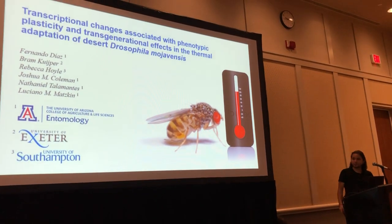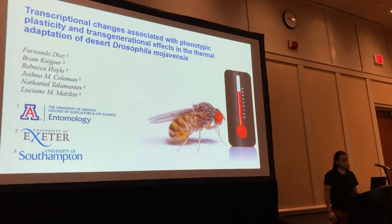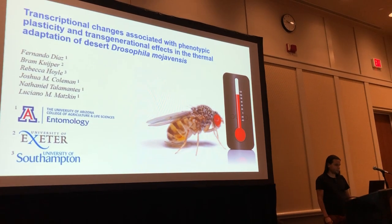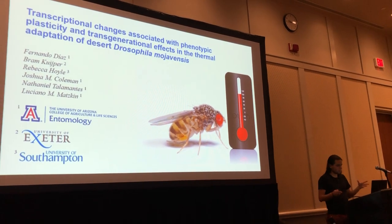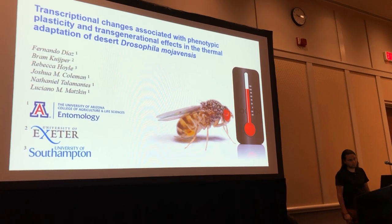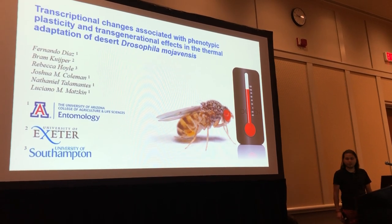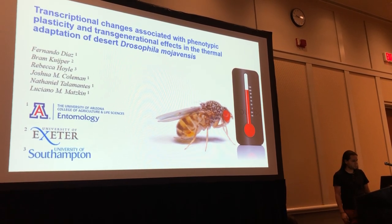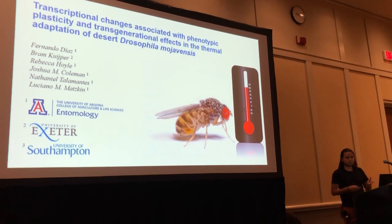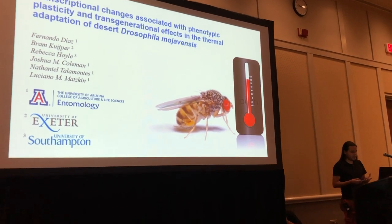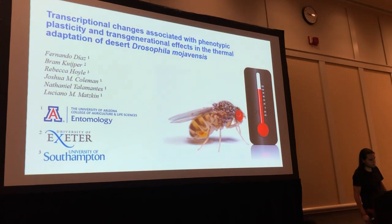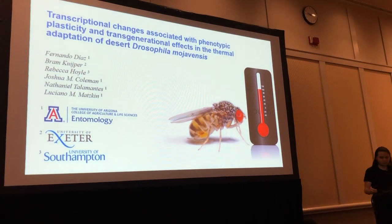I'm Matt Foster from the Entomology Department at the University of Arizona, and I'm going to present a big picture of some of the recent results from this project that has been going on for two years now. It's about investigating the interactions between plasticity and transgenerational effects in the thermal adaptation of Drosophila mojavensis.